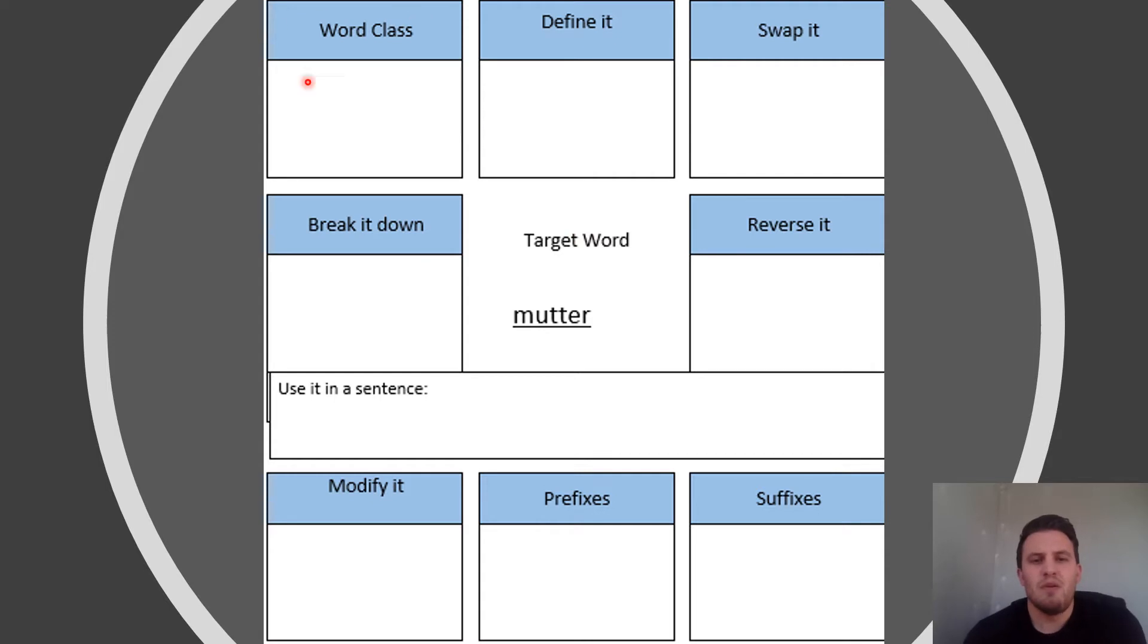Our first box is our word class. Is it a noun, is it a verb, adverb, or an adjective? Once you know what word class it might be, you need to try and define it. Tell us what you think it means. The swap it box, we need to swap it for another word, a synonym. Then we go down to our reverse it box, this is the antonym, the opposite. Is there a word that means the opposite of mutter? Break it down, nice and simple into our syllables. And then we try and use it in a sentence as well.